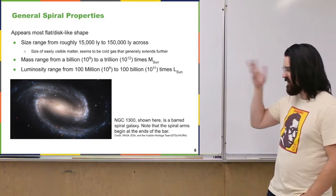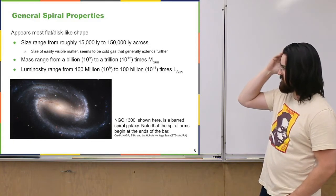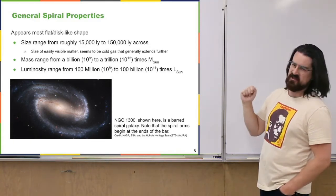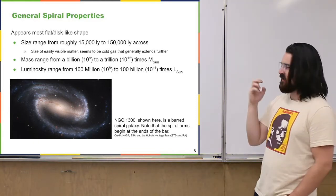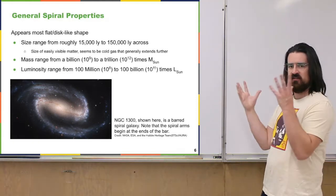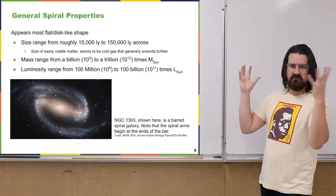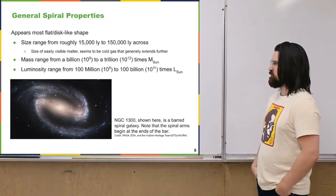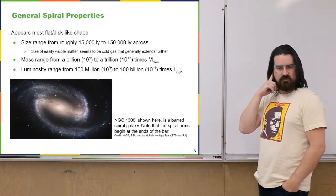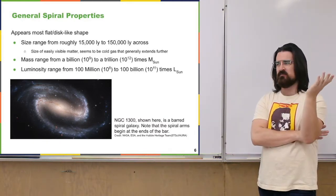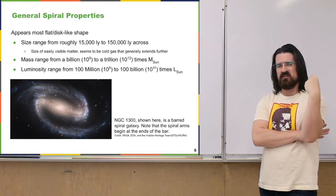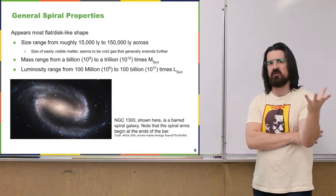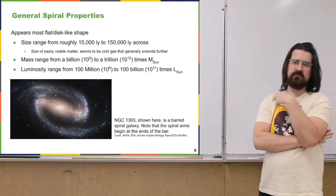As for the mass of spiral galaxies, it's somewhere from about a billion to a trillion times the mass of our Sun. And luminosity — how much electromagnetic radiation is being put out by the whole galaxy — is anywhere from about a hundred million to a hundred billion times the luminosity of our Sun. The formation of galaxies is still somewhat mysterious overall — how galaxies form, why we have these spirals, why there are these other kinds.